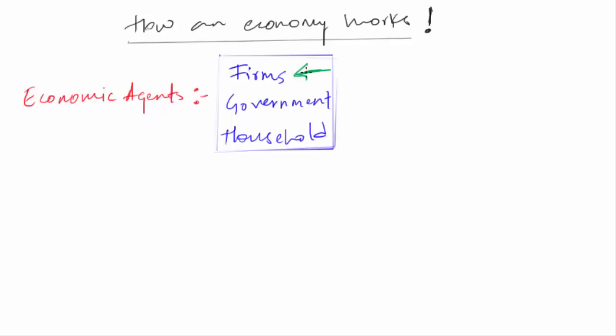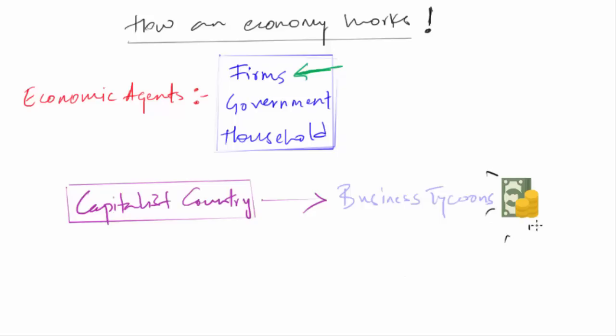Let's first understand the role of a firm. To understand this topic, we are going to take an example of a capitalist country. In a capitalist country, production activities are mainly carried out by capitalist enterprises. In other words, we call them business tycoons, like how in India we have the Ambanis, the Tatas, the Birlas, etc. Countries like United States, Canada, France, and Germany are good examples of a capitalist economy.